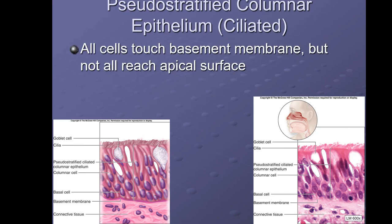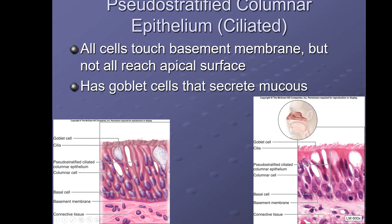Pseudostratified columnar epithelium — falsely stratified. All cells touch the basement membrane, but not all reach the surface, giving the appearance of multiple layers even though it is still actually one layer. There will be goblet cells that secrete mucus. For our purposes, pseudostratified columnar epithelium always has cilia, and a great example is throughout your respiratory tract, starting in your nasal cavity and moving down your trachea.